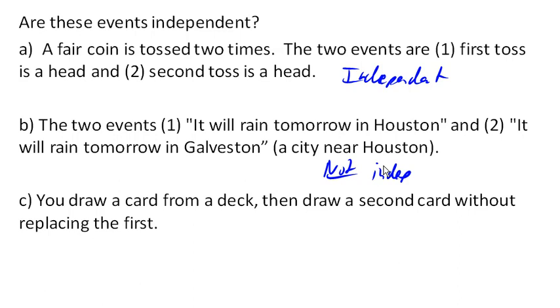How about you draw a card from the deck and then draw a second card without replacing the first? This is, again, not independent because the result of the first draw will affect the result of the second draw. For example, if we're asking about the probability of getting an ace, the likelihood of getting an ace on the second draw depends upon whether or not we got an ace on the first draw. So these are not independent.